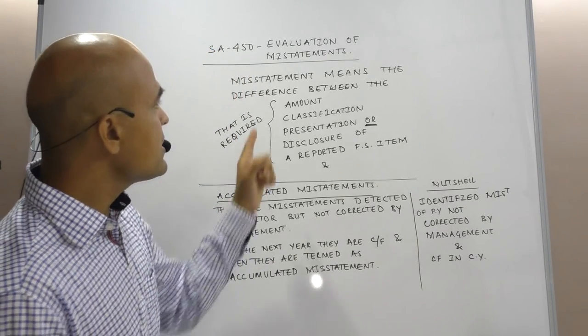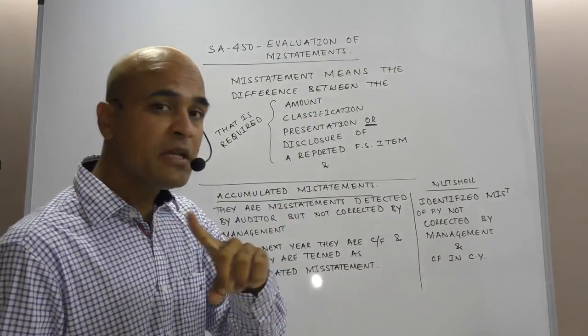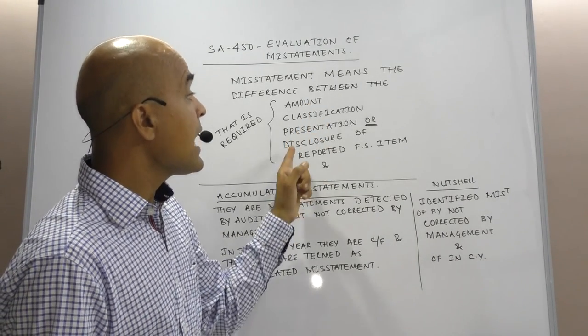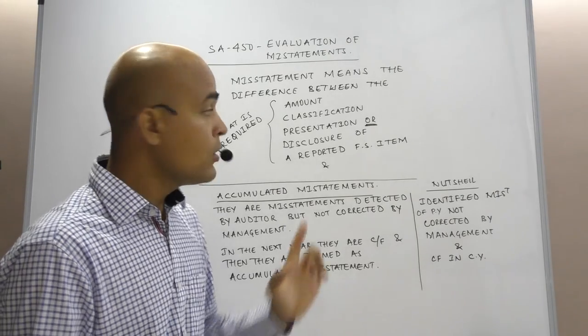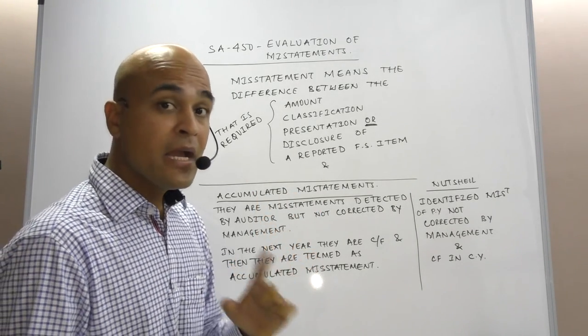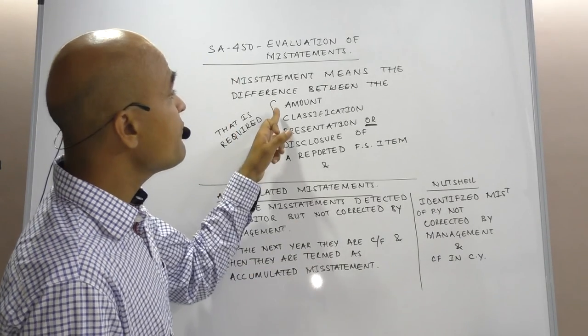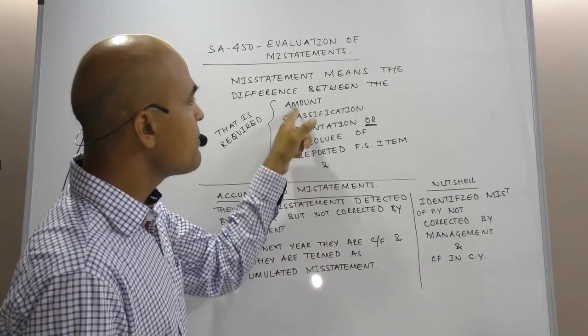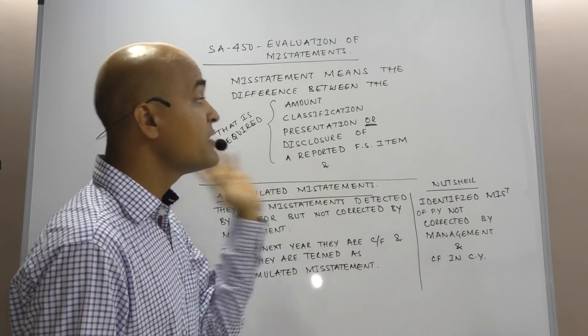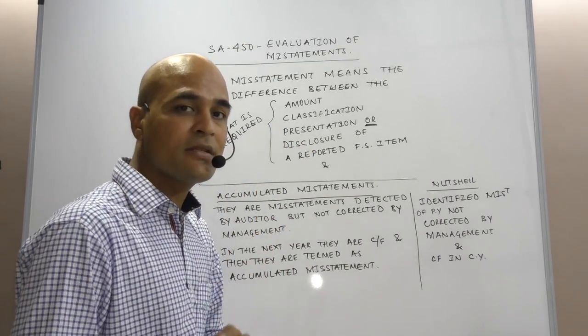Misstatement means the difference between the amount, classification, presentation and disclosure of a reported financial statement item. I mean to say I have already reported some amount, I have already classified some item, I have presented it, I have disclosed it in the financial statements.